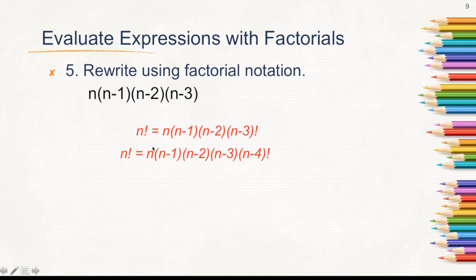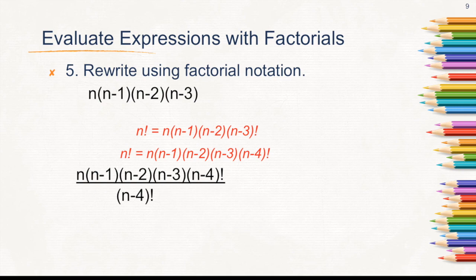So how can we now rewrite this using factorial notation? From here, this can give us a clue. Using identity property of multiplication, we can multiply the expression by (n minus 4) factorial over (n minus 4) factorial. Therefore, the numerator now is equal to n factorial, and then divided by (n minus 4) factorial.